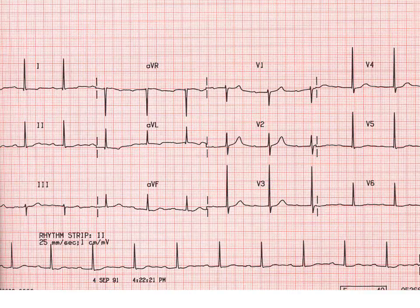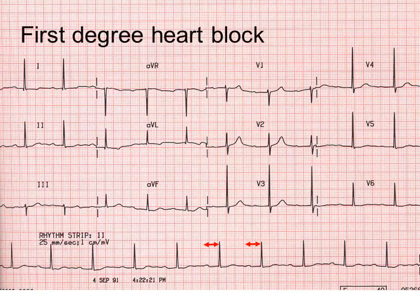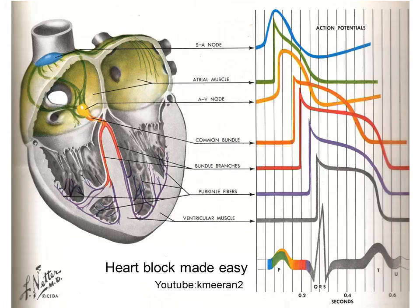In this ECG the only abnormality is a prolonged PR interval. This is therefore first degree heart block. In first degree heart block there's a little bit of ischemia so that the PR interval is longer than usual, which means the AV node is delaying a bit more than it should.